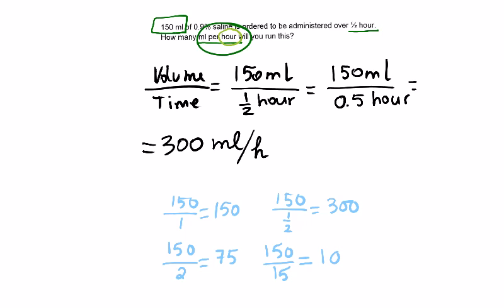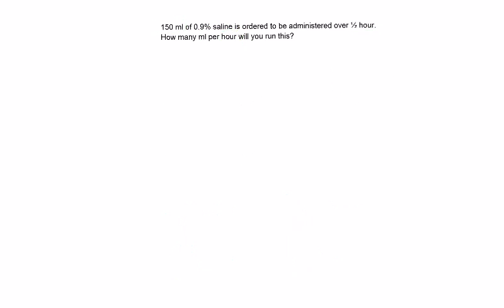If we wanted to do this in a slightly different way, we could try and use the box method. We have to infuse 150 mils over half an hour, and the question says how many mils per hour will you run this.